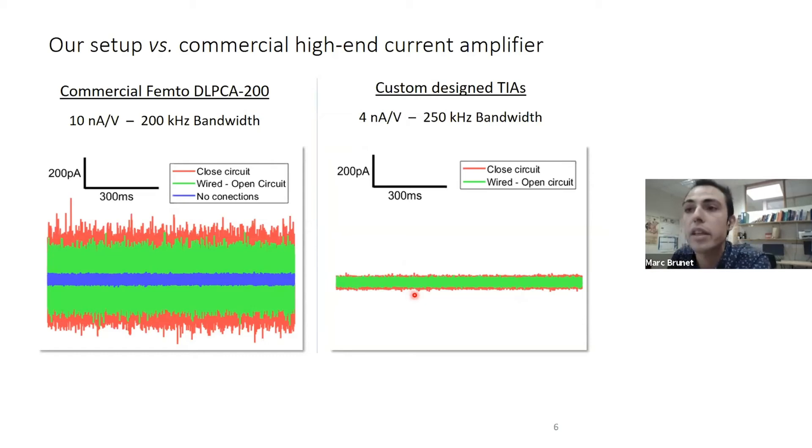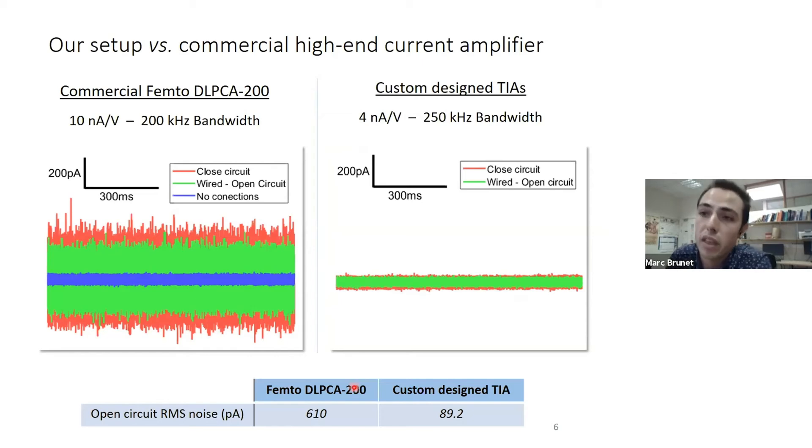On the right side, it is presented the current trace from our custom-designed setup combining the SECCM and the custom-designed current amplifier. We have more than double the magnification of the commercial one and a slightly higher bandwidth. As we can see, the peak-to-peak noise compared to the other one—this is with all the connections already done because in the PCB board they're all integrated—is much less than the commercially available. Just by forming the electrochemical cell, it does not represent a high increase in noise.